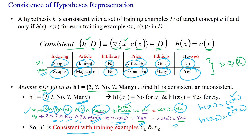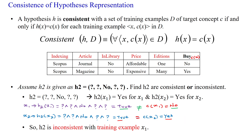Like that we will see another example. Given hypothesis H2 — we check whether it is consistent or inconsistent. H2 has question symbol, question symbol, no, question symbol, and question symbol. We will check with sample number 1, X1.